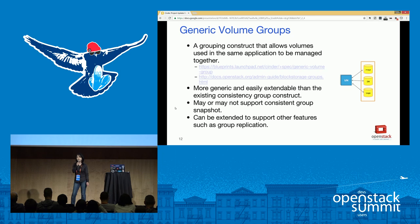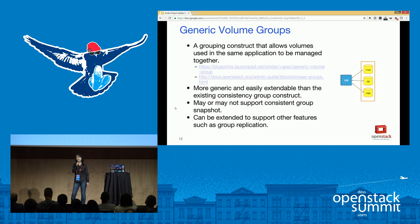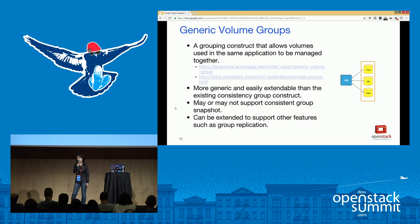We added a generic volume groups construct in Newton. How is that different from consistency groups already in Cinder? Consistency groups currently only support consistent group snapshots. When trying to extend them to support replication groups, we found limitations because backends have different requirements — some support consistent group snapshots while others want to replicate a group of volumes without maintaining write-order consistency. Also, if an application has multiple volumes it's convenient to group them together for management. That's why we added generic volume groups.